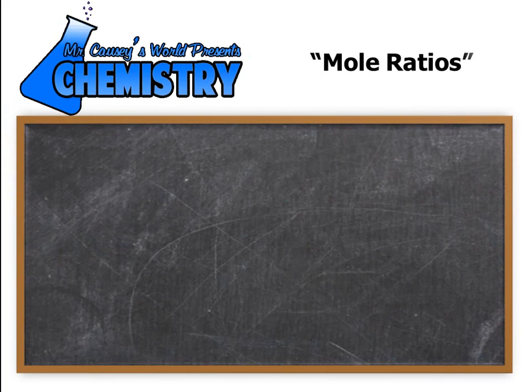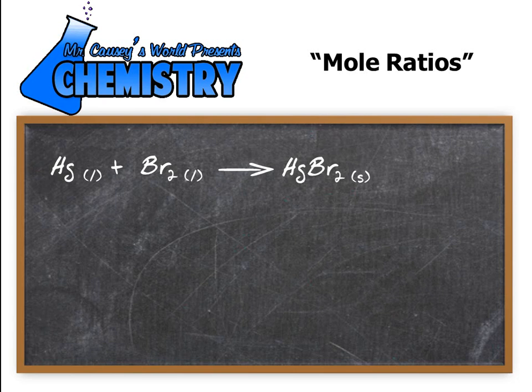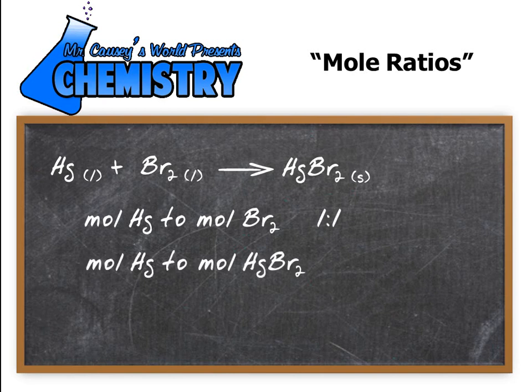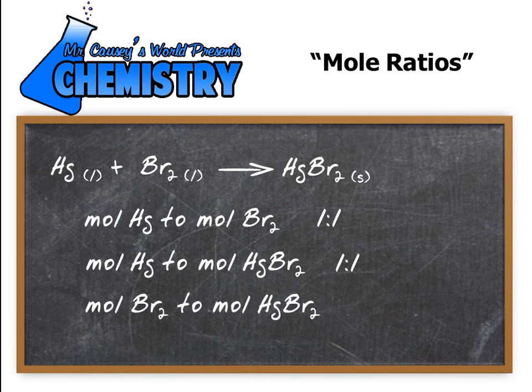Let's check the board again — mole ratios. There are three mole ratios available: mercury to bromine is 1 to 1, mercury to mercury bromide is 1 to 1, and bromine to mercury bromide is also 1 to 1. So all our ratios are 1 to 1, which means whatever moles of mercury I use, I use the same moles of bromine, and I get the same moles of mercury bromide. It makes it very easy when it's 1 to 1.